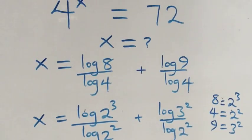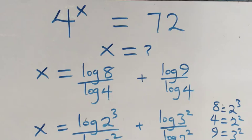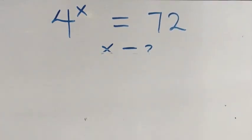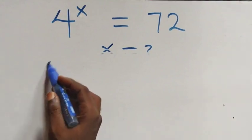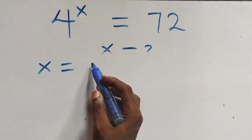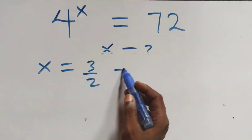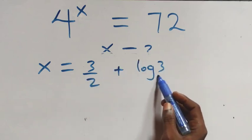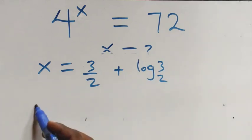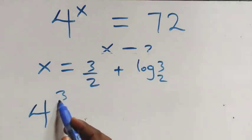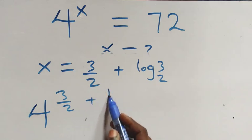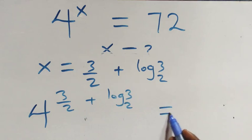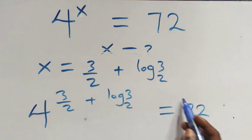We substitute the value of x, which is x equals to three over two plus log three to base two. Then what we have becomes four raised to the power three over two plus log three to base two — is it equal to seventy-two on this side?